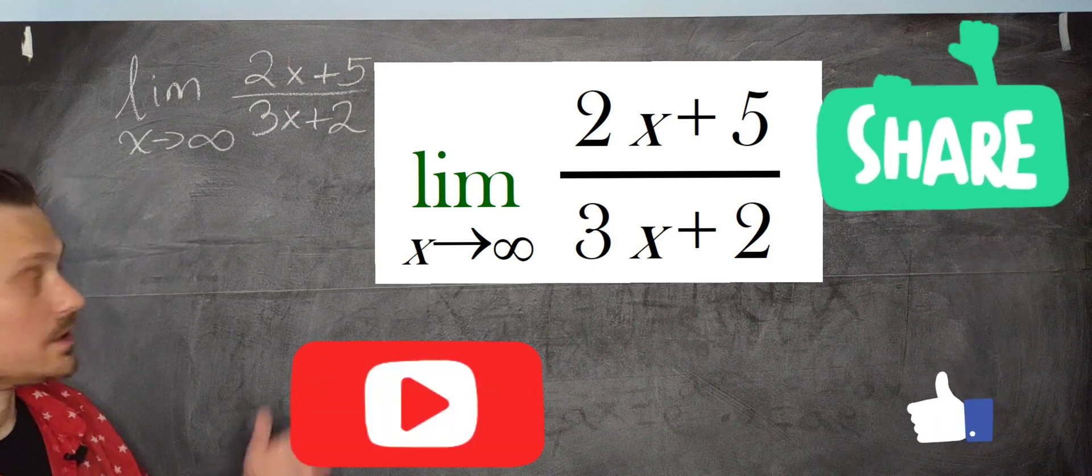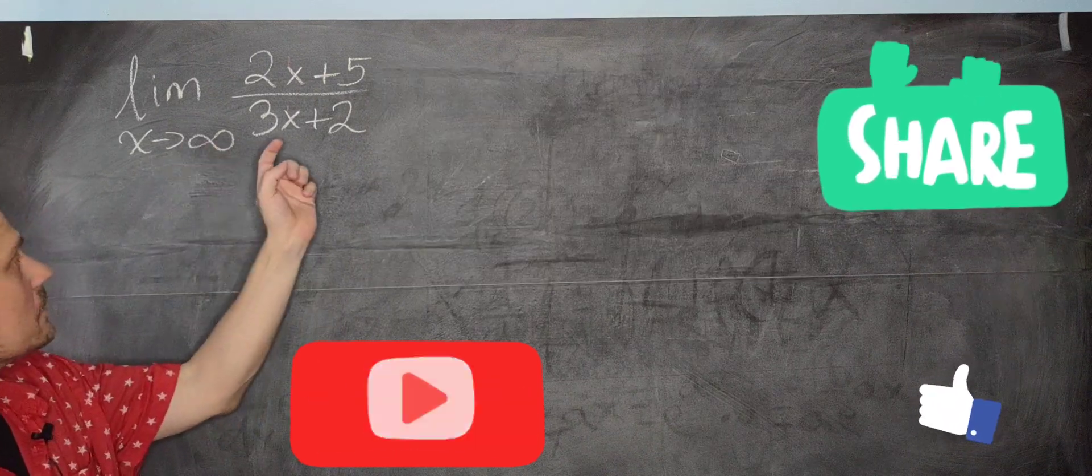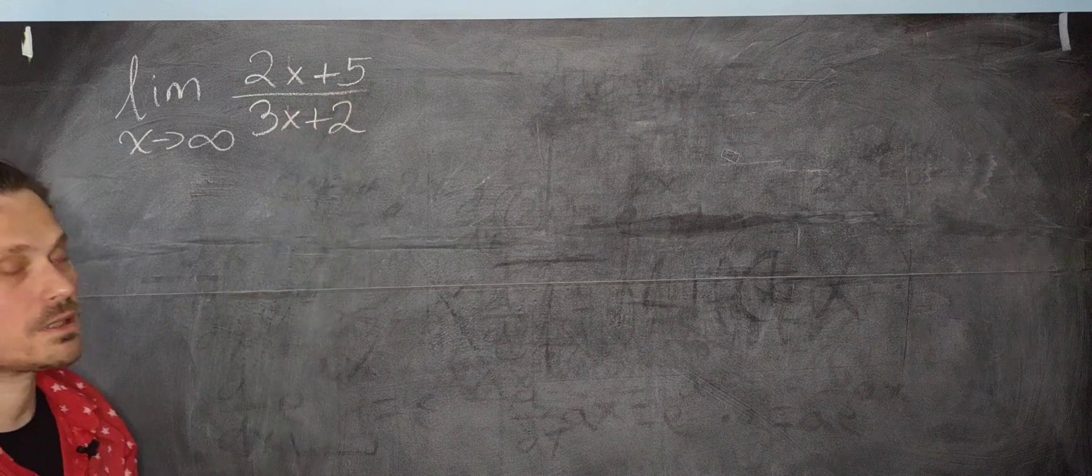Welcome friends, in this one I'm going to show you how to find the following limit. The limit as x approaches positive infinity of 2x plus 5 over 3x plus 2.